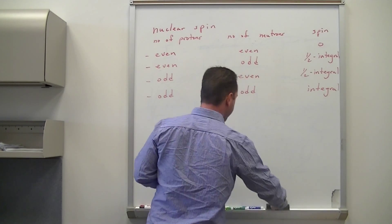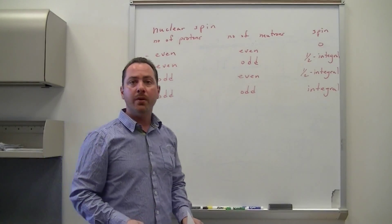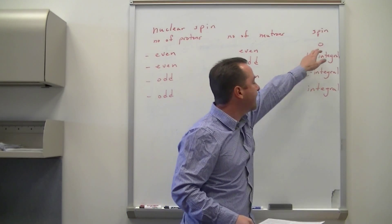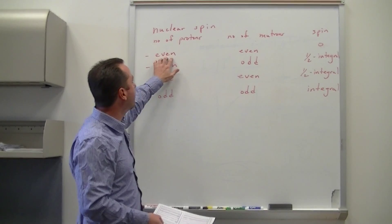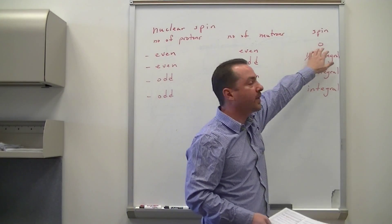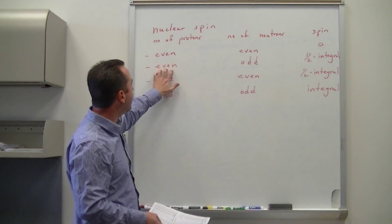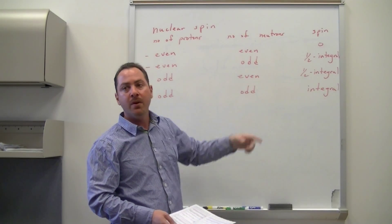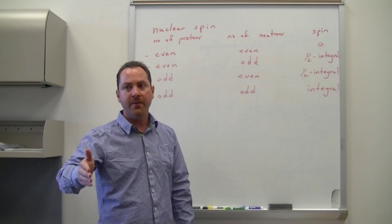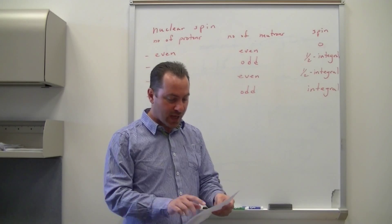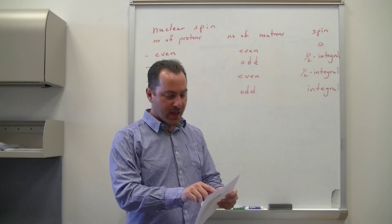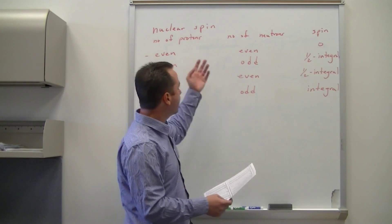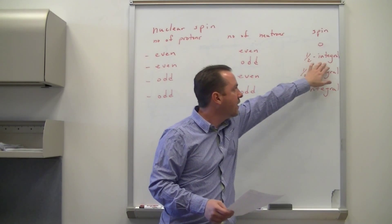Depending on the number of protons and neutrons in the nucleus, the spin will be defined. For example, if I have an even number of protons and an even number of neutrons, then my spin will be zero. If I have an even number of protons and an odd number of neutrons, I can have spins that are half-integer values — one half, three halves, seven halves. For example, hydrogen-1 has a spin of one half, but boron-11 has a spin of three halves.